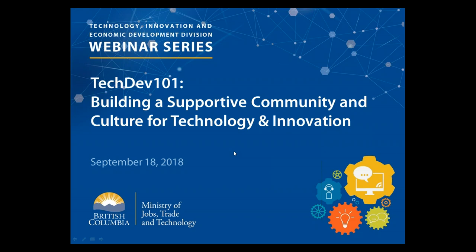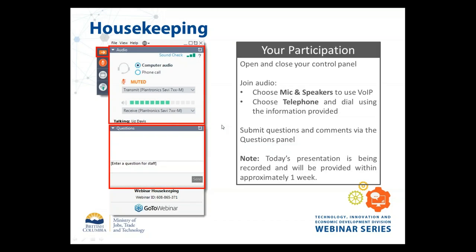Before we go any further, I'm going to review some housekeeping items for those perhaps new to the webinar platform. The orange arrow lets you shrink the control panel to the side of the screen - it automatically shrinks if you don't do anything for a while, so don't panic. The orange microphone tells you that you are muted. When we start discussion, we're handling questions by having you write into the 'enter a question for staff' box. The little hand lets you raise your hand to show that you want to speak, but the best thing to do is put your question into the question box.